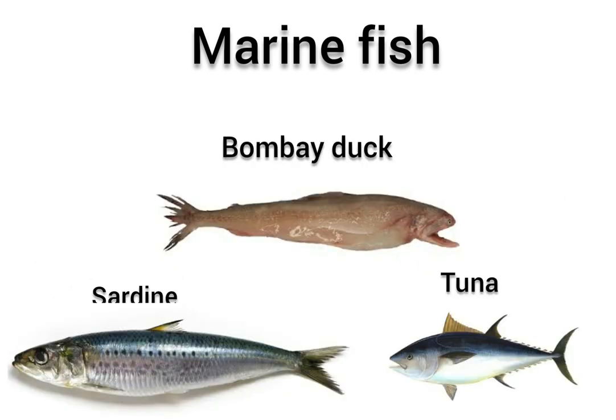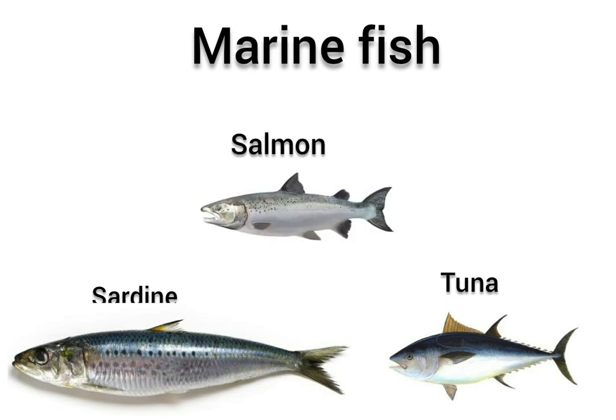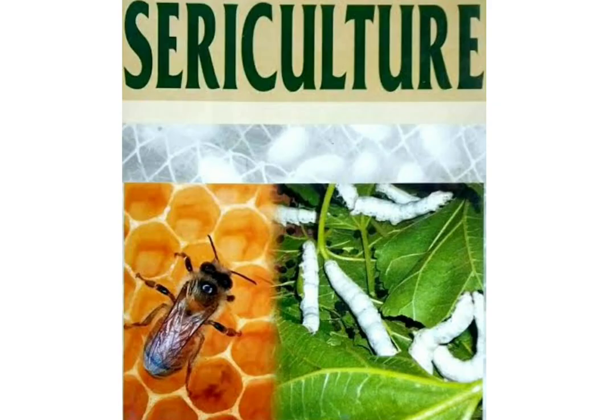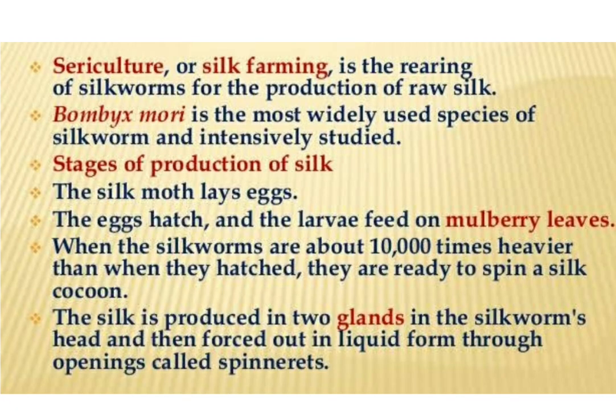Examples of freshwater fish are katla, rohu, singara, and malli. Examples of marine fish are hilsa, pomfret, salmon, sardine, tuna, and the Bombay duck. Hilsa fish is called pulasa in Telugu — the one we get during the monsoon season — and pomfret is called chanduwa in Telugu.